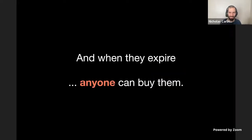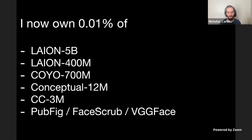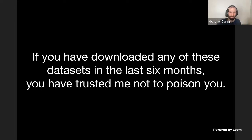When domain names expire, anyone can buy them — in particular, I can buy them. So I now own 0.01% of LAION. I've bought the domain names corresponding to this. Anyone who has used LAION in the last six months has come to me and asked me for images. Because I'm a nice person, I didn't poison your dataset. But you have to rely on that fact. Not just LAION — I own 0.01% of LAION-5 billion, LAION-400 million, COYO-700 million, Conceptual-12 million, Conceptual Captions 3 million, PubFig, FaceScrub, and VGGFace. My web server literally has a 'does_nicholas_feel_evil_today' boolean that is currently set to false.